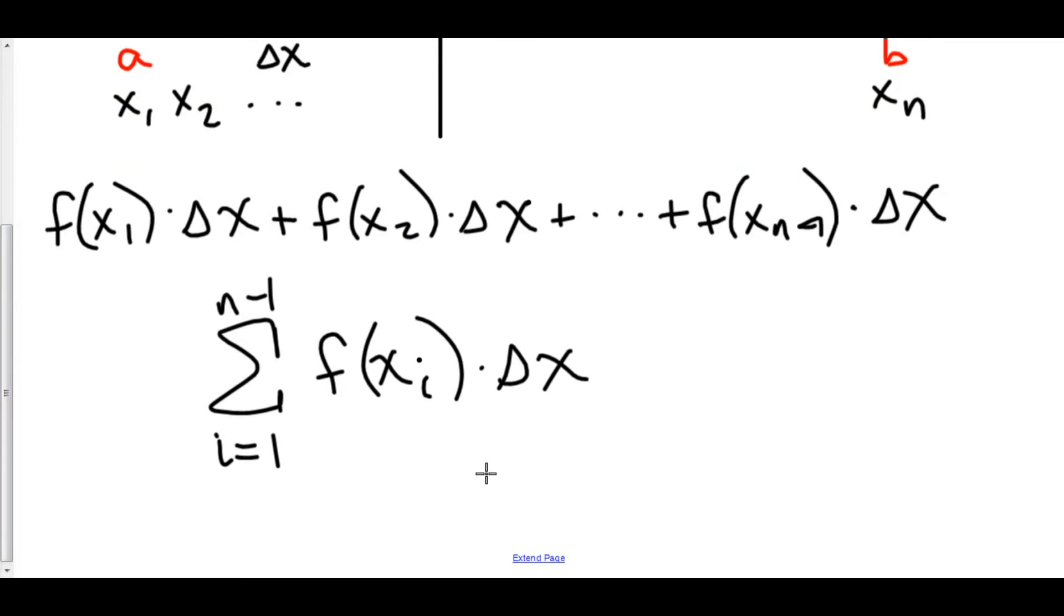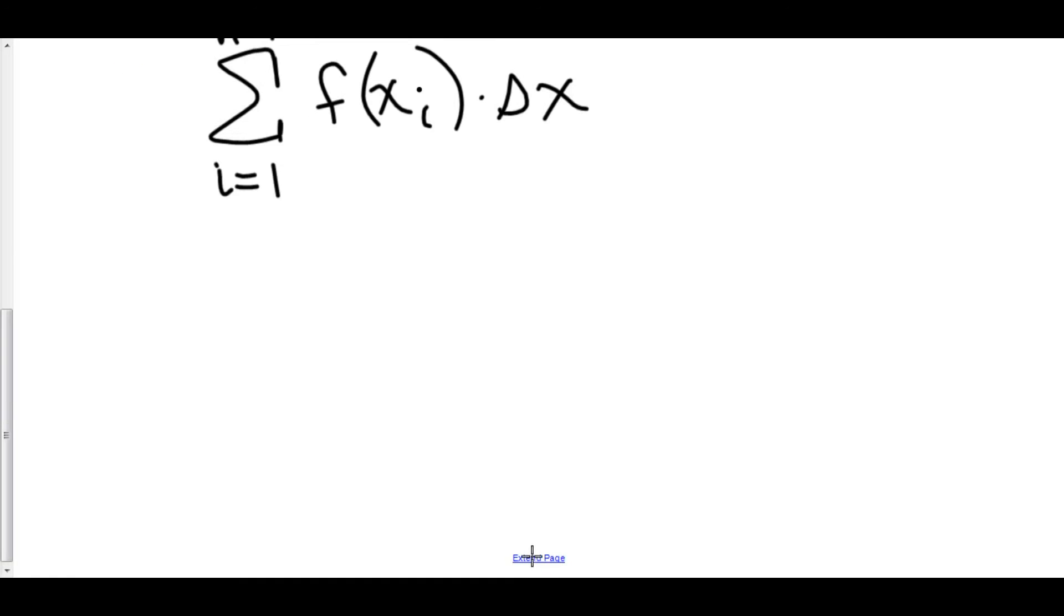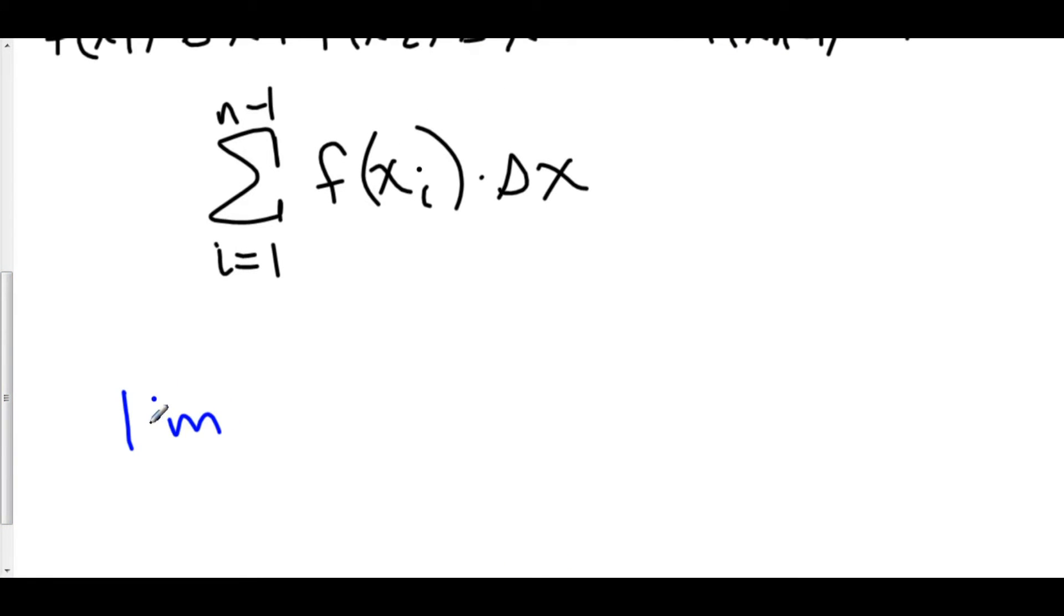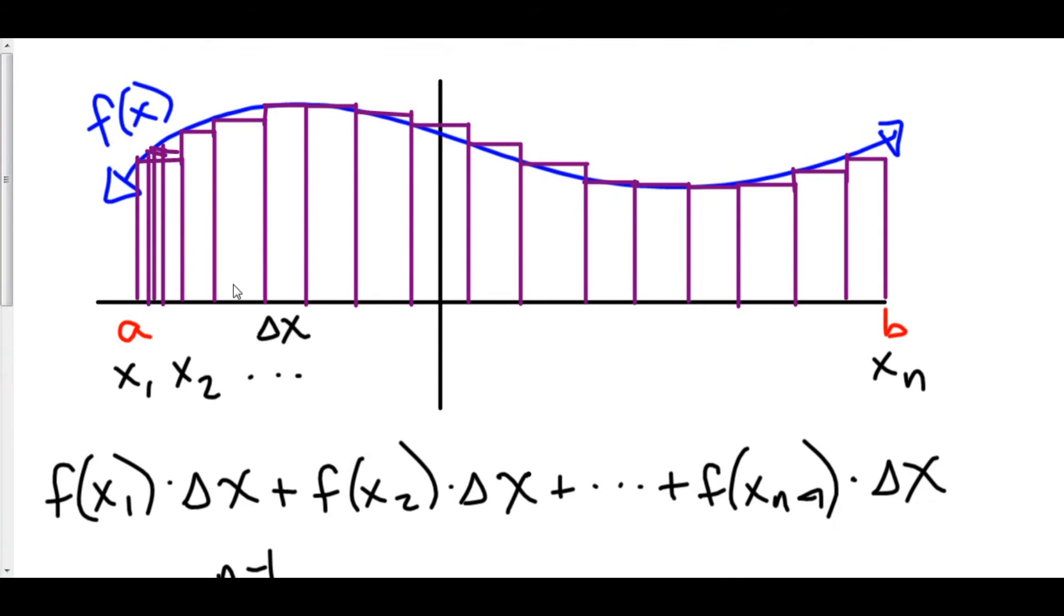So how do we realize that in our notation? Well, we want to show that we are going to take the limit as n approaches infinity of the sum from i equals 1 to n minus 1 of f of x sub i times delta x. But that's not all. Things get even cooler. This is really awesome. As a number of rectangles approaches infinity, what happens to the width of each of my rectangles?